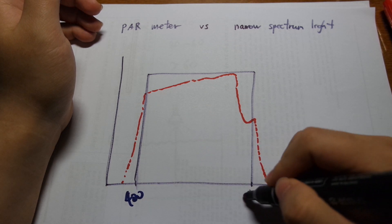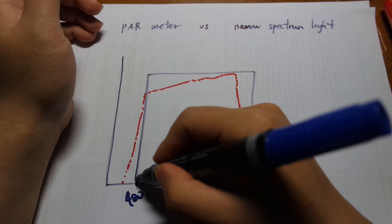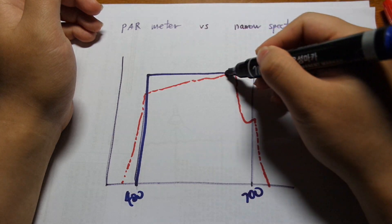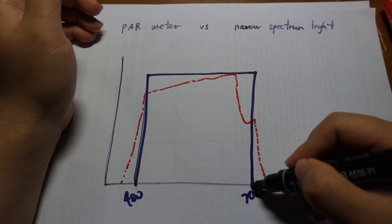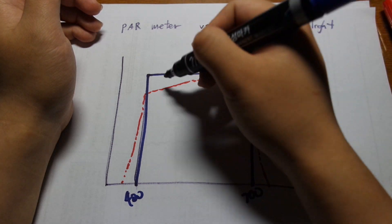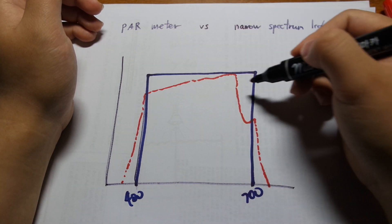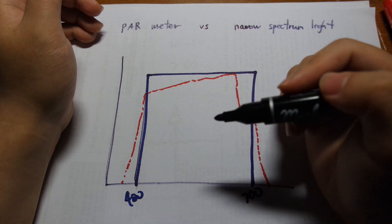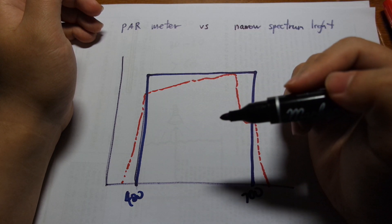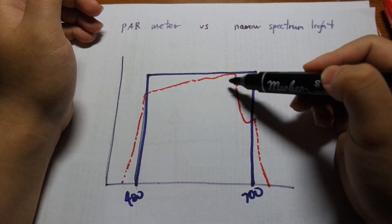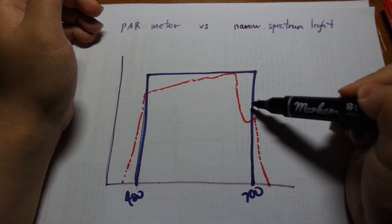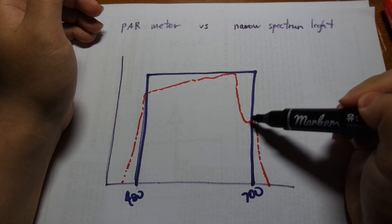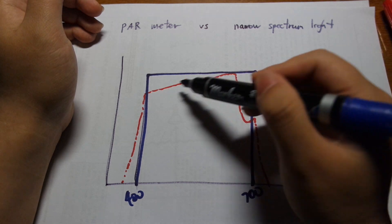So an ideal PAR meter, if you have something between 400 and 700 nanometers, it should measure all photons equally within the range. So red, green, blue, purple, whatever, it should measure everything that's in there. But if you take the actual curve of a PAR meter, it'll look something different. Like this is an example, it will look something a bit lopsided like this, and it'll not pick up the red photons very well. And it will not weigh them equally.